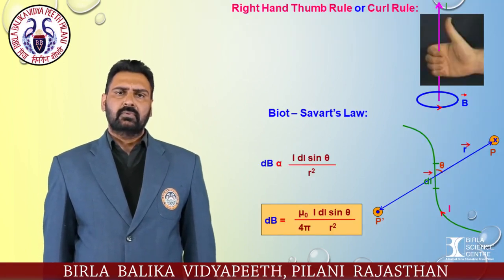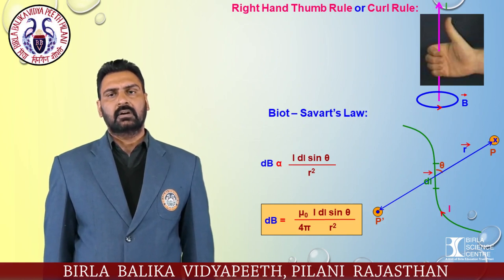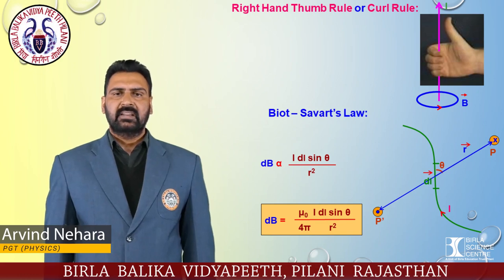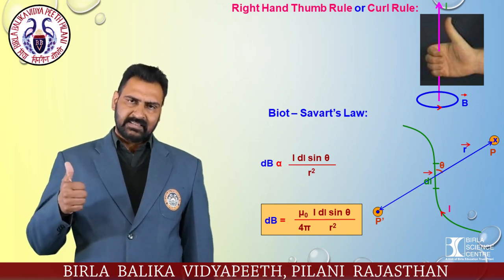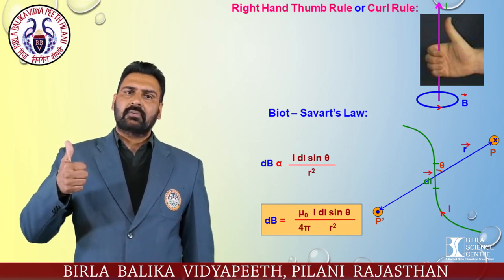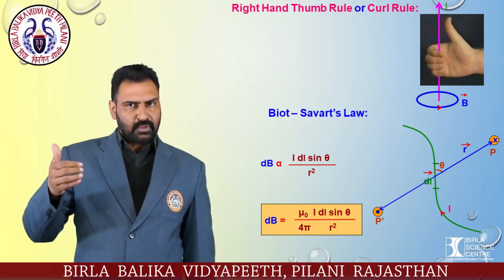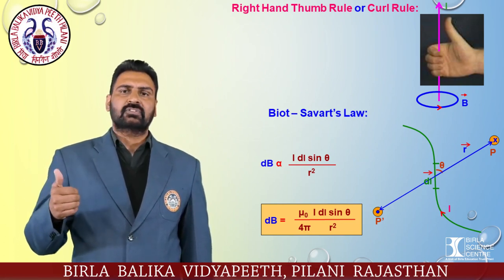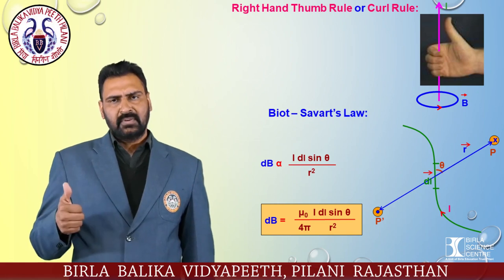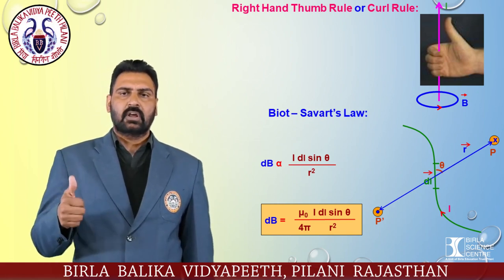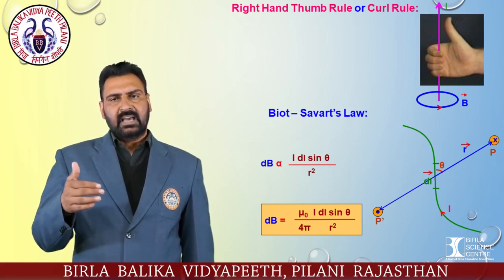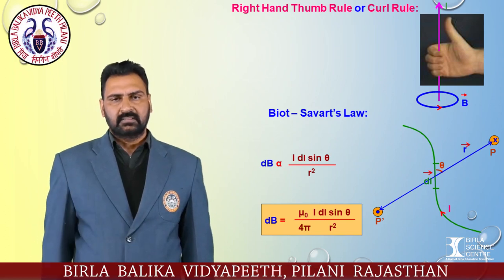The right hand rule, or right hand thumb rule, or curl rule states that if a current carrying conductor is imagined to be held in the right hand such that the thumb points in the direction of the current, then the tips of the fingers encircling the conductor will give the direction of magnetic lines of force. As shown in the figure, if the thumb points upward (direction of current), then the direction of the magnetic field is anti-clockwise.